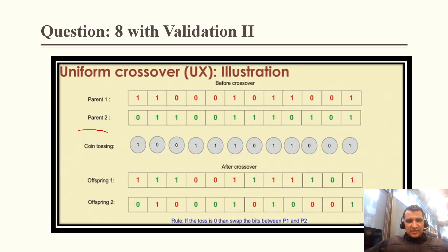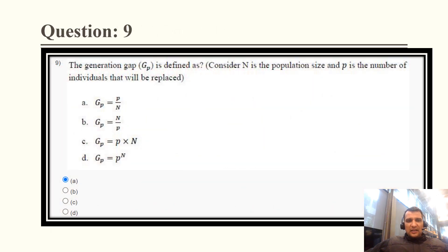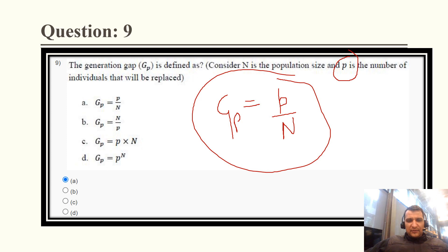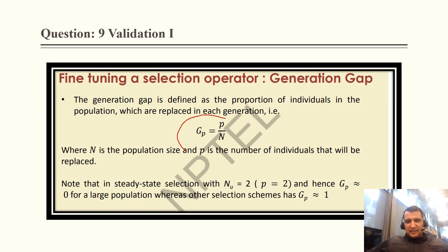In coin tossing, the rule is: if the toss is zero, swap the bits between parent one and parent two. Question 9: The generation gap GP is defined as the number of individuals (small p) divided by the population size (capital N). From this we can confirm the correct option, and the validation directly shows that the generation gap equals individuals divided by total population N.